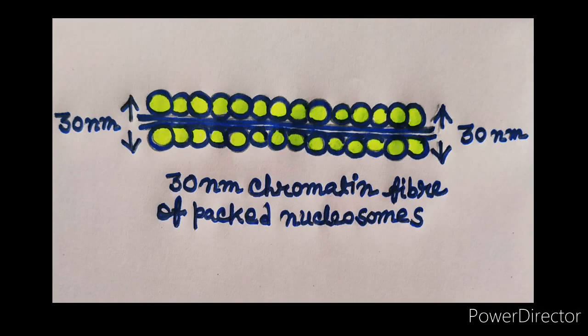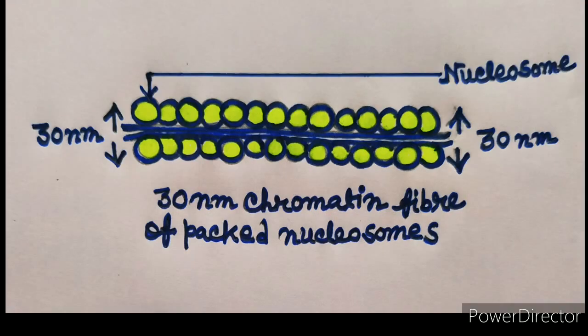In this case, the beads on string structure of chromatin in turn coils into a 30 nanometer diameter fiber that packs the nucleosomes very tightly and brings them close together.